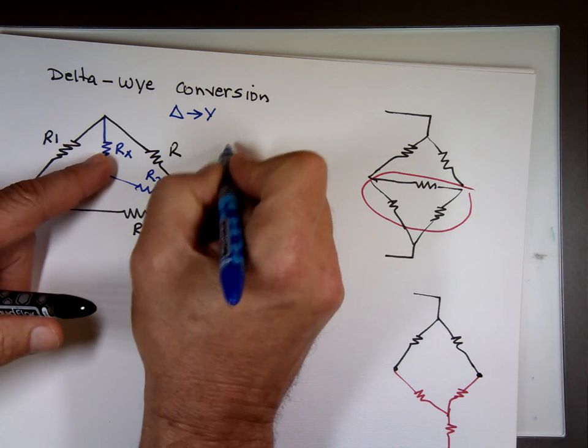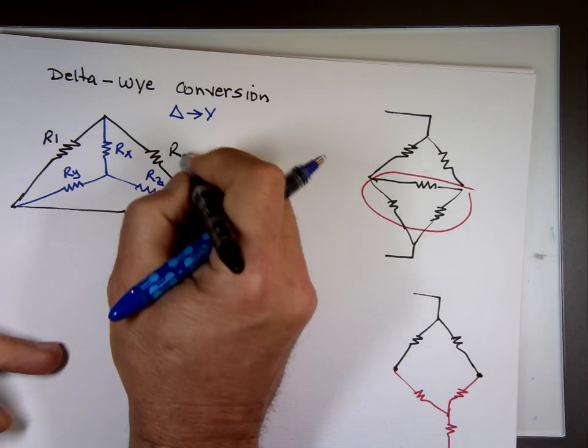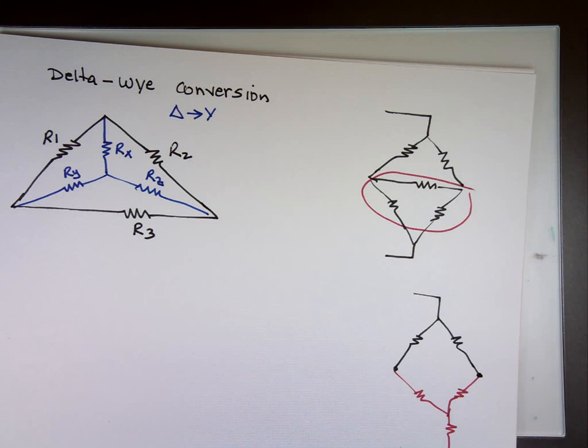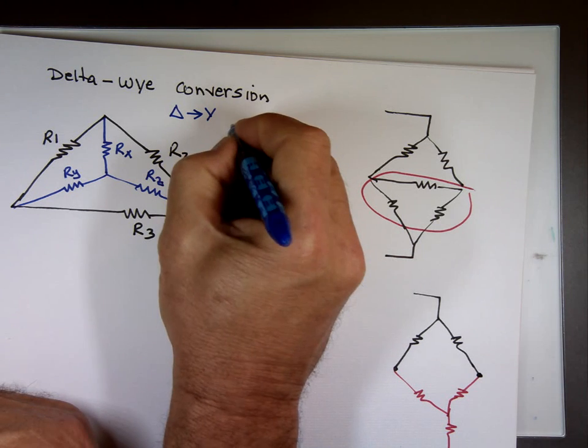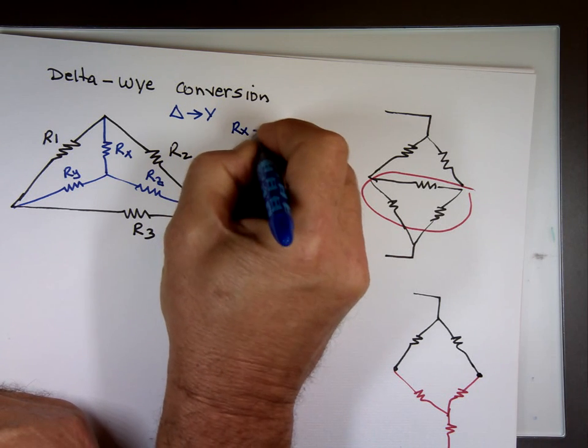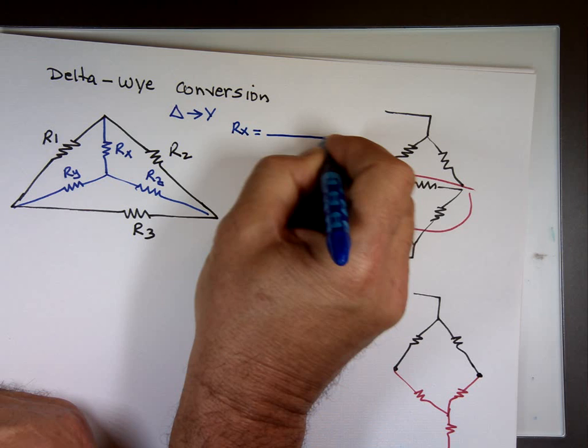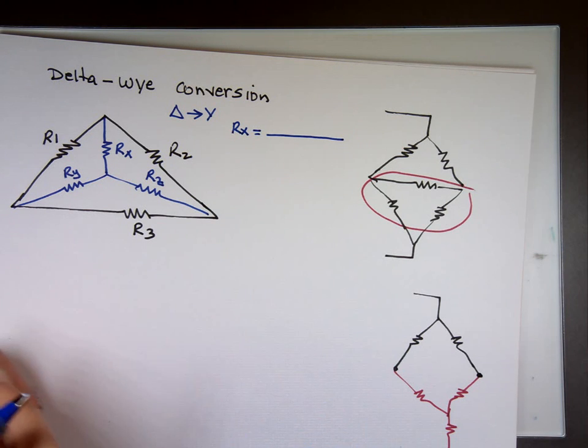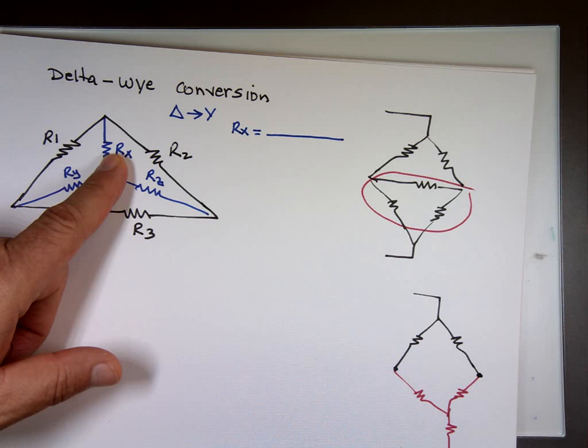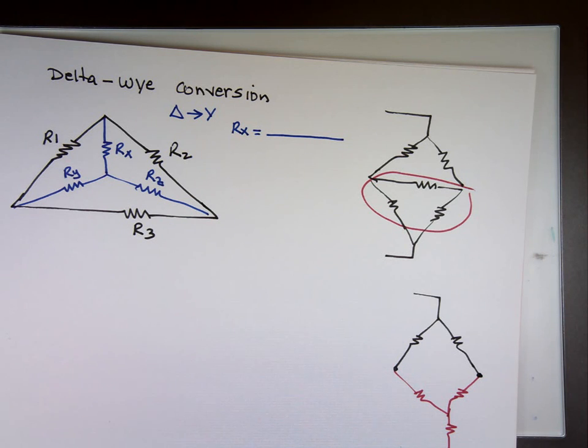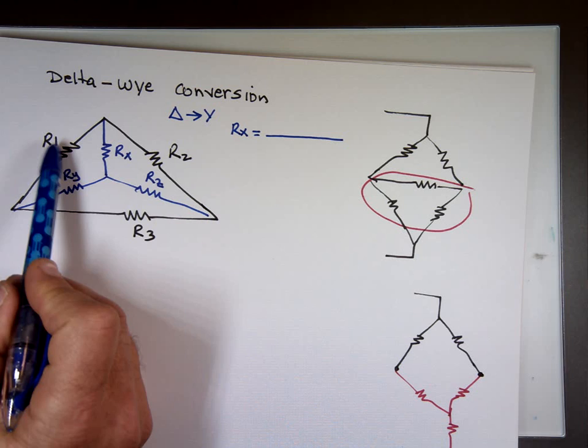To find R sub X, the first one. If you look at the picture, I drew intentionally, I did it that way intentionally. Because the same thing for all of them. See where R sub X is squeezed between what? I'll give you a chance to draw the diagram.